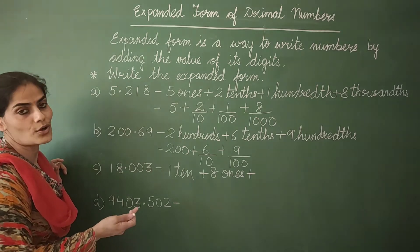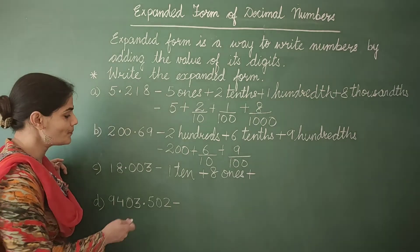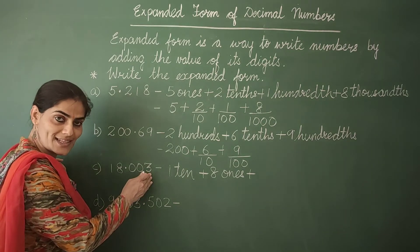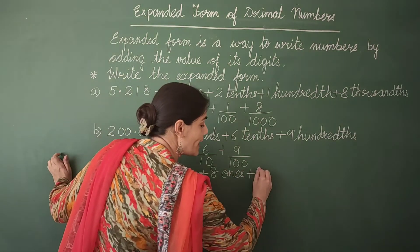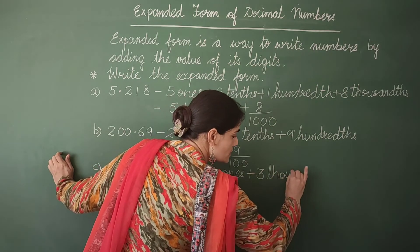So 0 hundredths is also equal to 0. Now I move to the next digit, which is 3 thousandths. So I write here 3 thousandths.